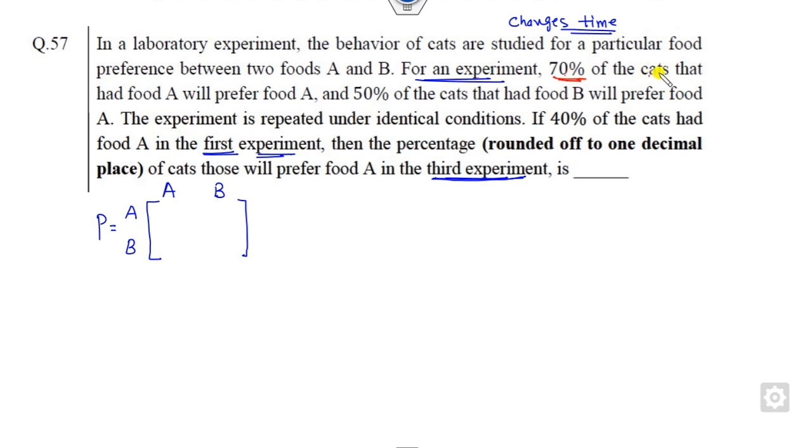What is given to you? 70% of the cats that had food A will prefer food A again. 50% of the cats who had food B will prefer food A in the next step. Once you have the two numbers, we all know that the sum of the row is 1. It is 0.3 and 0.5.